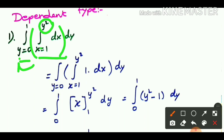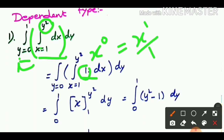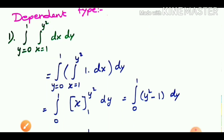With x equal to 1 to y squared, we integrate 1 dx. Integrating 1 means integrating x to the power 0, which gives x to the power 0+1 divided by 1, which is simply x. Applying the limits, the upper limit is y squared and the lower limit is 1. So we get y squared minus 1, and this limit is 0 to 1 for y.